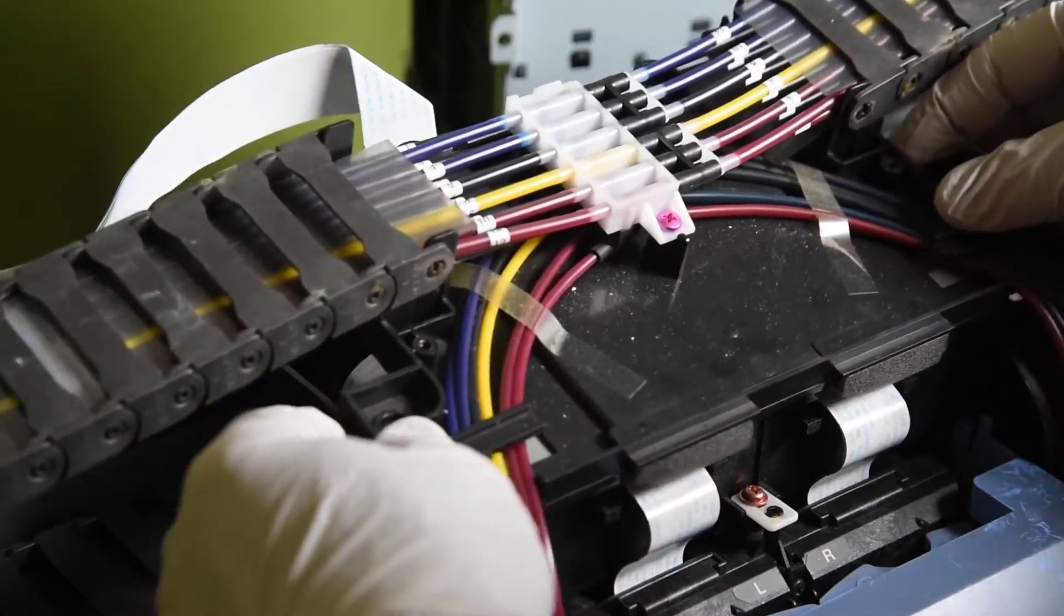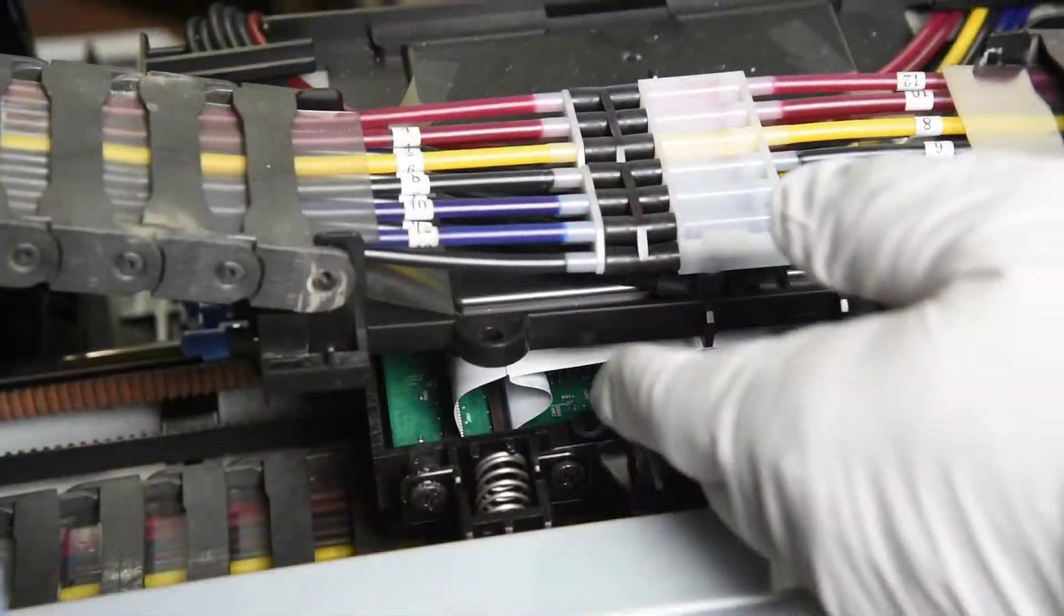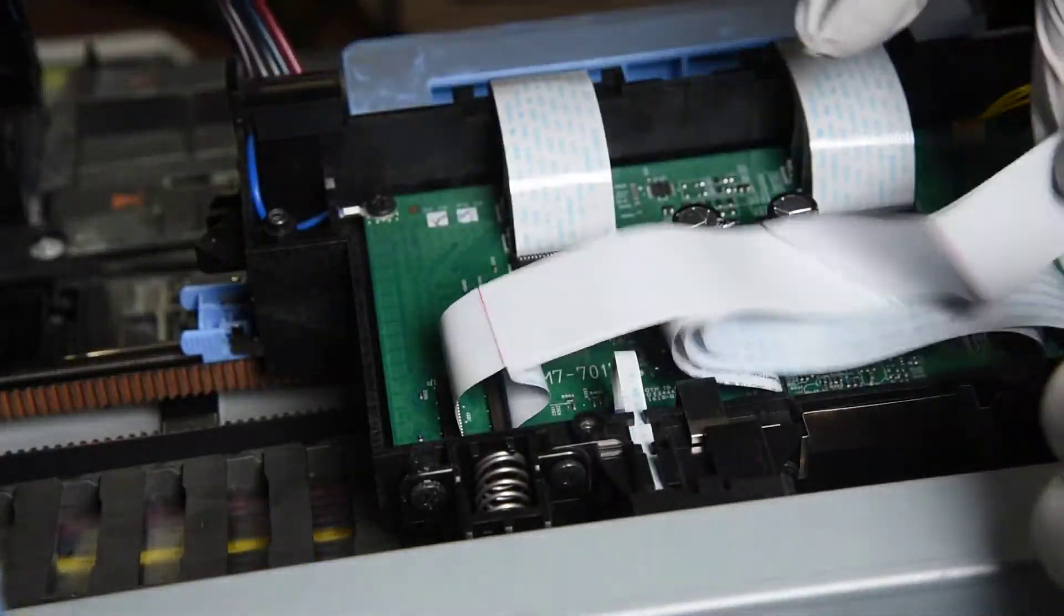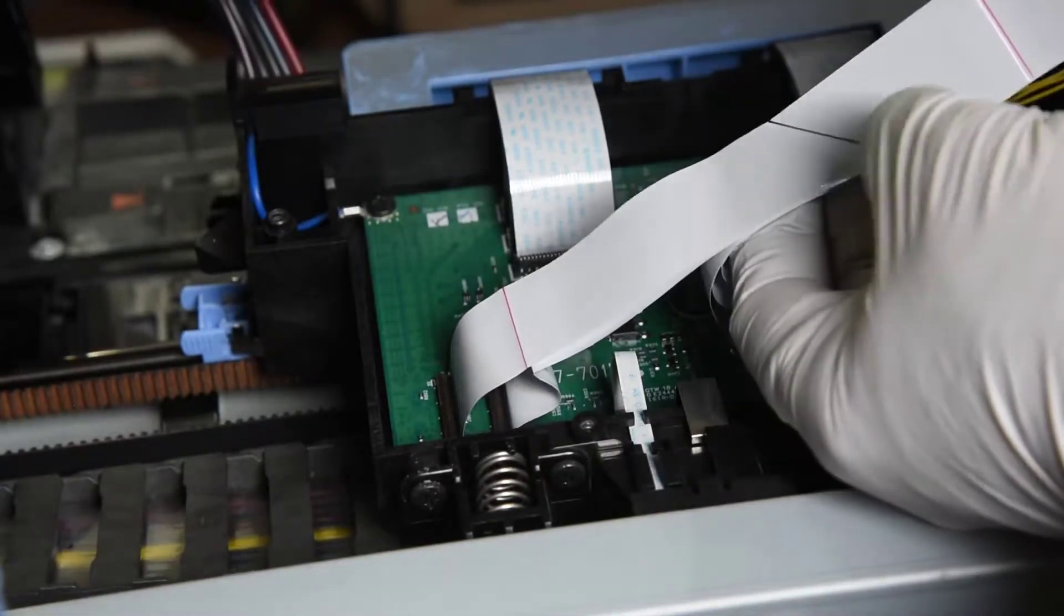After this bracket is removed, well can't really remove it, as it has all kinds of ink tubes connected to it, just have to move it a bit until it's out of the way. That will allow access to the connectors for the flexible cables.